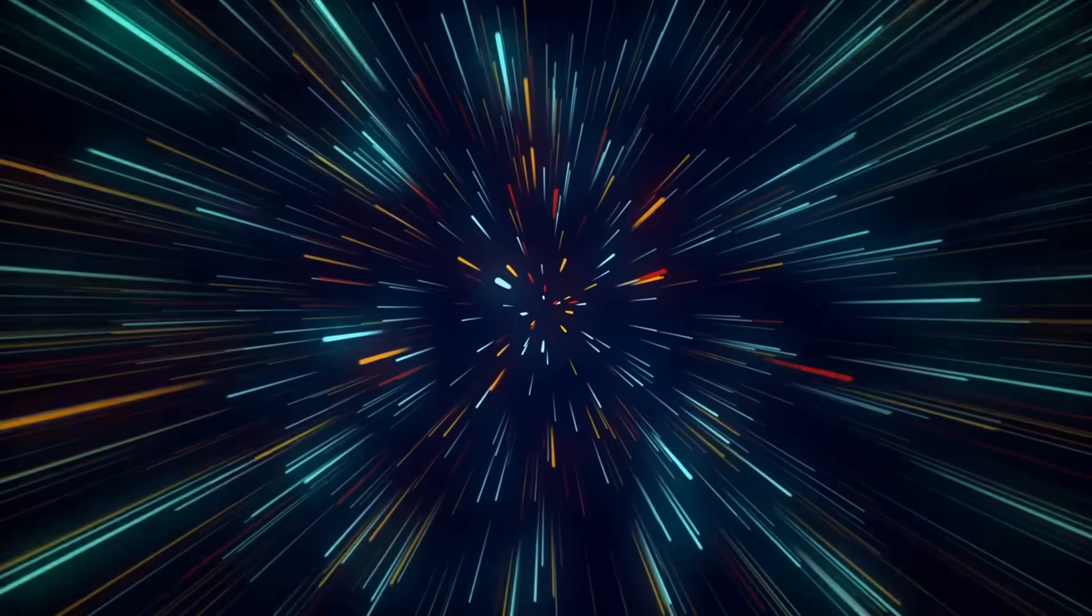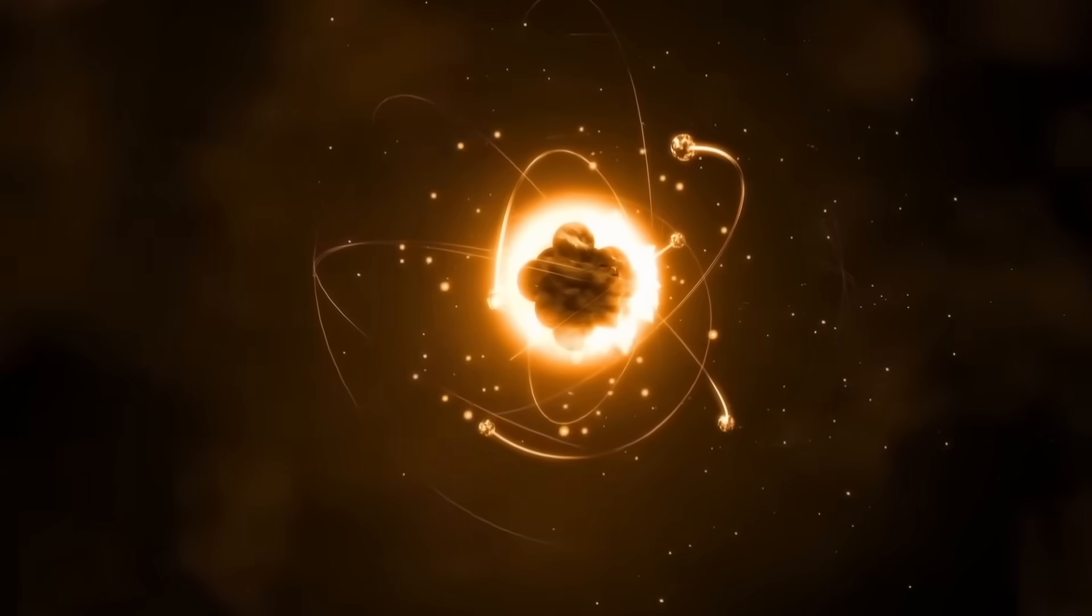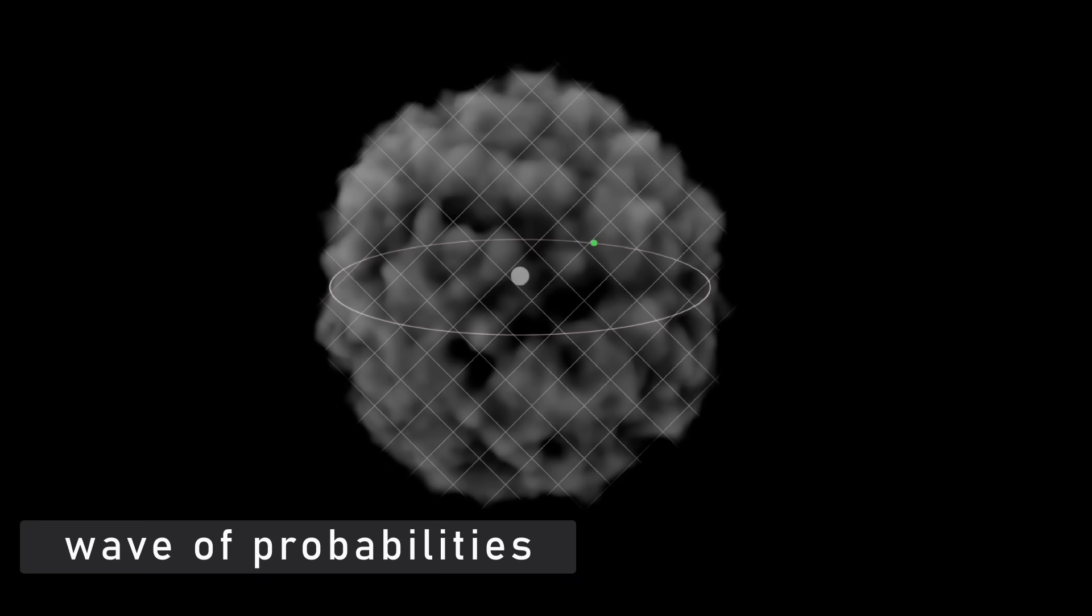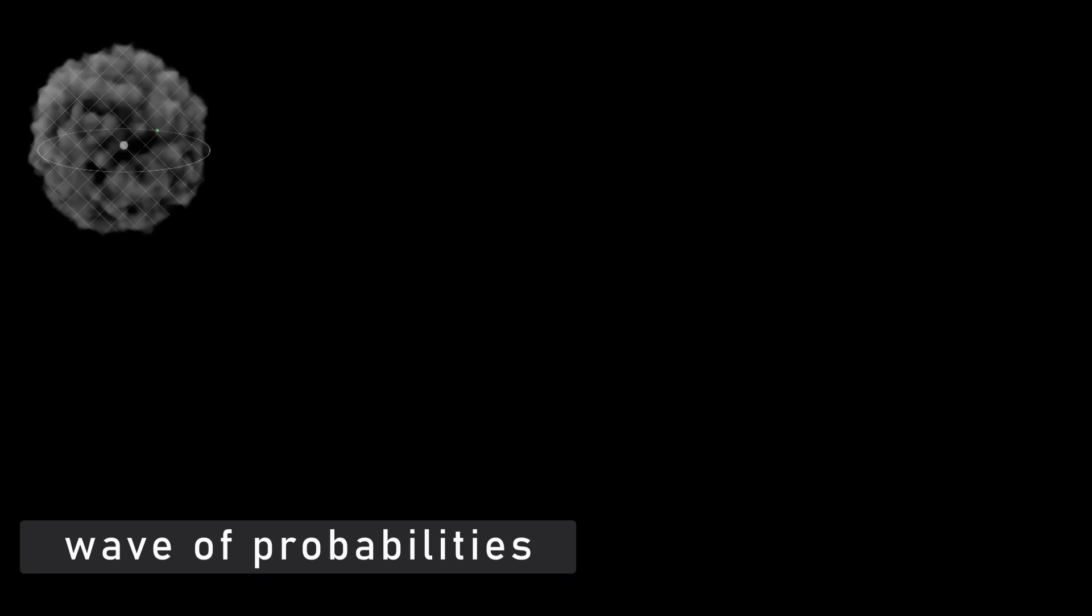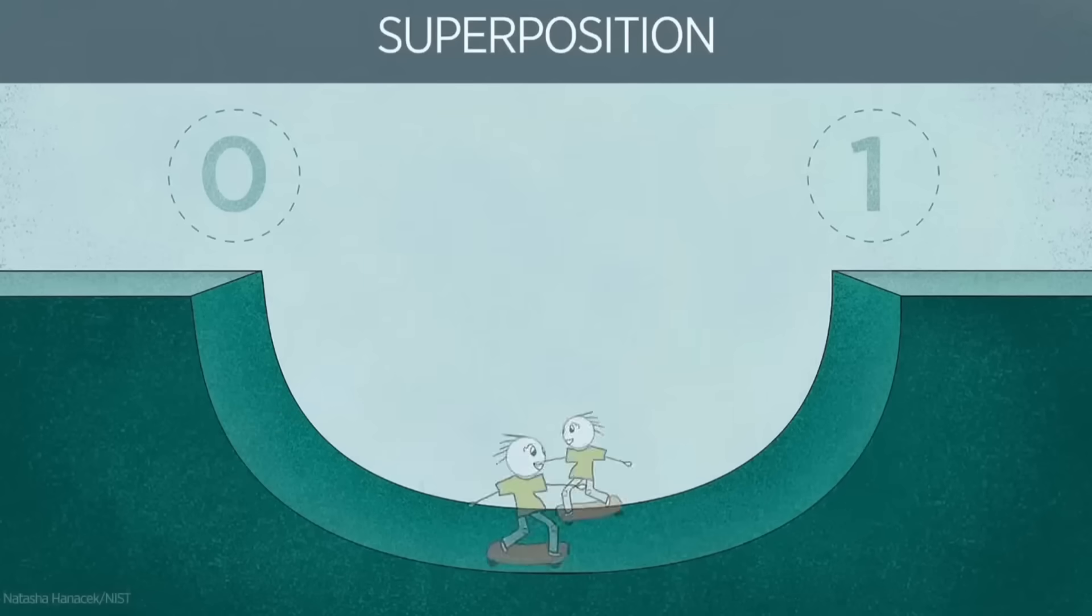To understand their discovery, we need to revisit one of the strangest truths in physics. An electron isn't a tiny ball orbiting a nucleus, it exists as a wave of probabilities, a cloud of potential locations and energies. Before you measure it, the electron is everywhere it could possibly be. It's not that we don't know where it is, it genuinely doesn't have a definite position.